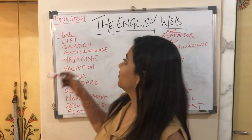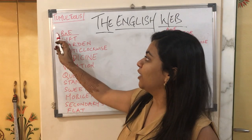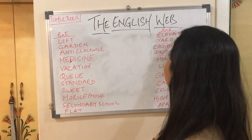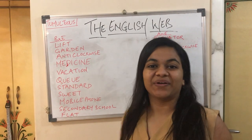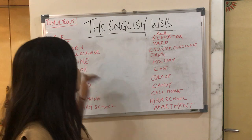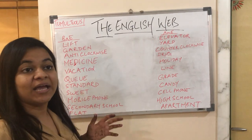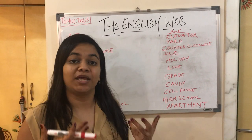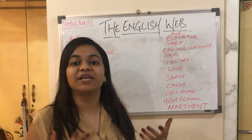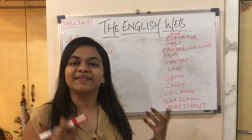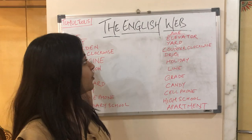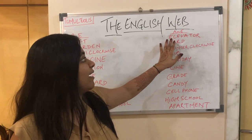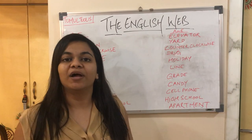The first word is 'lift.' In British English you say 'lift,' whereas in American English you say 'elevator.' For example: I wanted to go in a lift, but since it was taking a lot of time, I ended up taking the stairs. You just have to replace 'lift' with 'elevator' in an American English context.